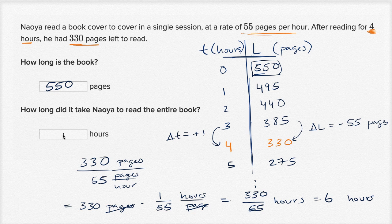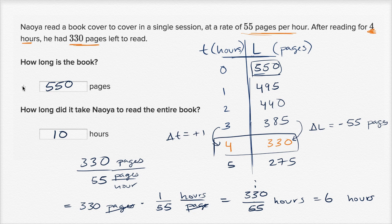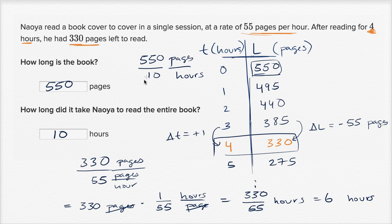We have to be careful — those 6 hours are after the four-hour mark. So in total, it's going to take him 10 hours. At 4 hours he had 330 pages left, and then 6 more hours to finish them, for a total of 10 hours. We can verify: if he reads 550 pages in 10 hours, his rate is 550 divided by 10, which is 55 pages per hour — consistent with what we were told.